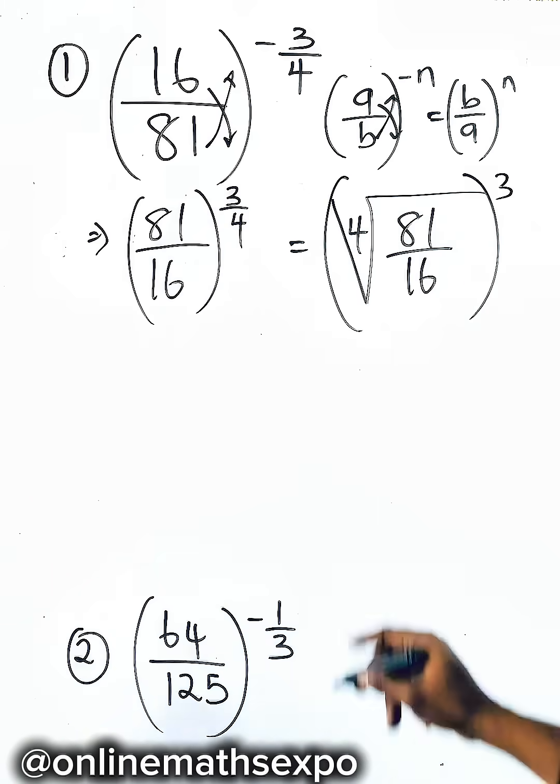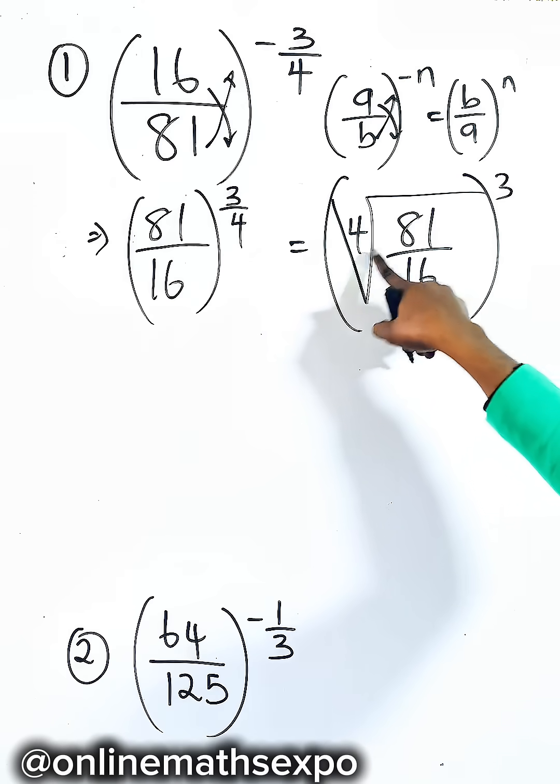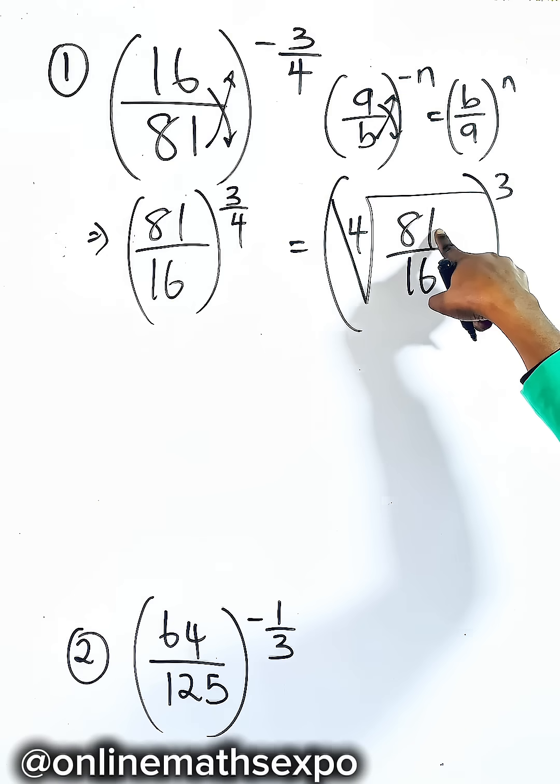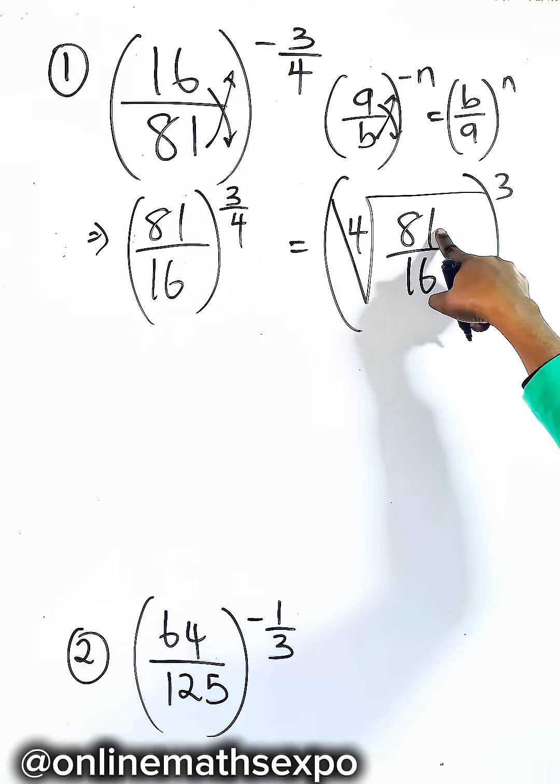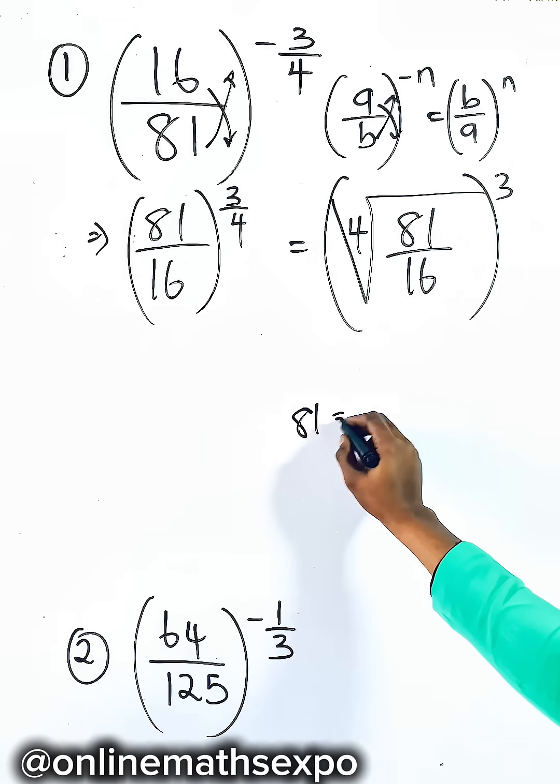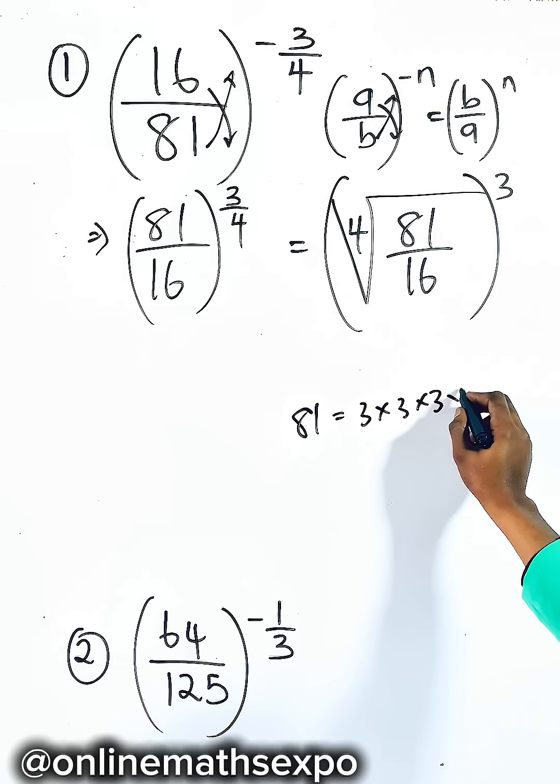So what do you do next? What is the fourth root of this? It means what same number can you multiply four times to give you 81? You know that 81 is 3 times 3 times 3 times 3, and 16 is 2 times 2 times 2 times 2.